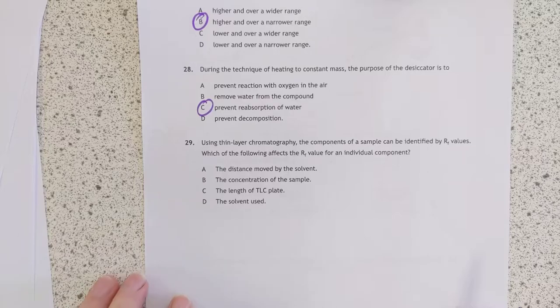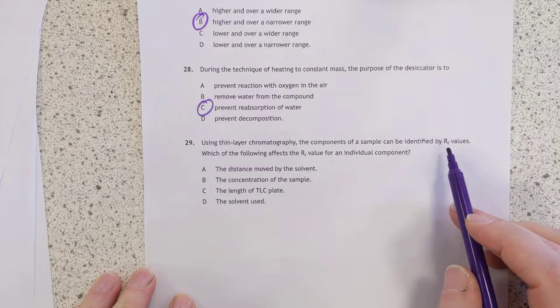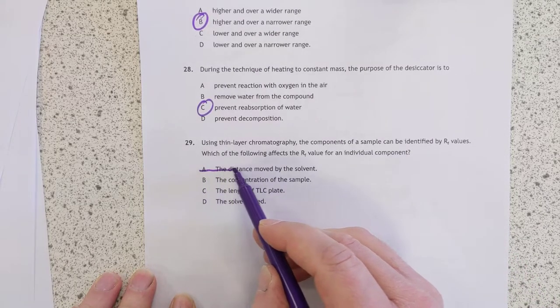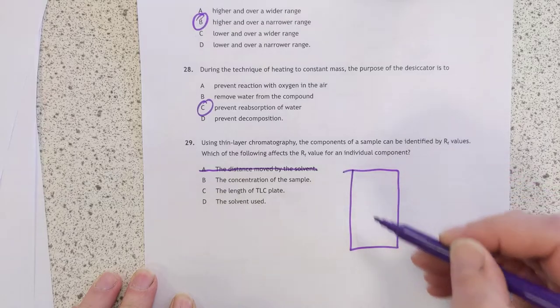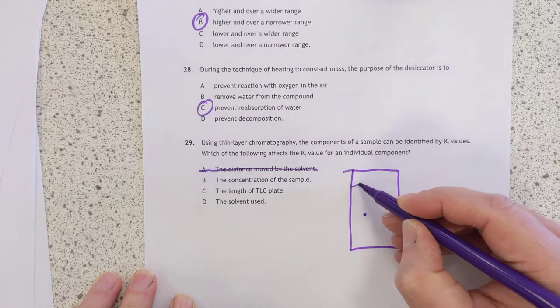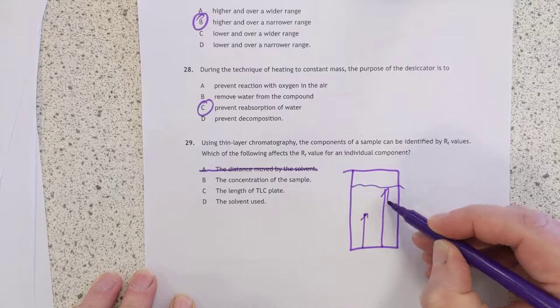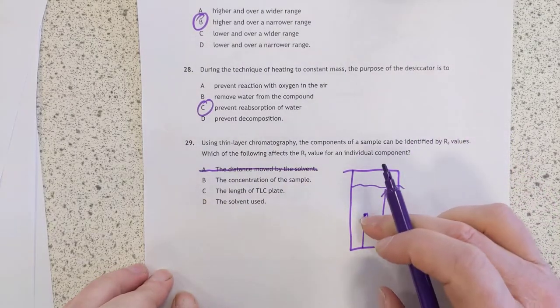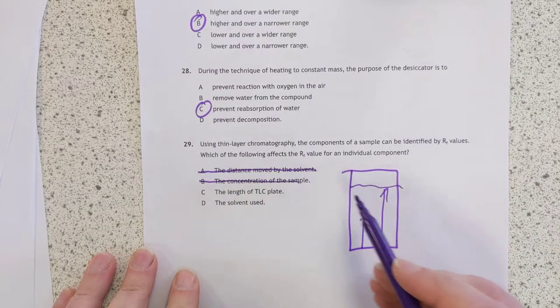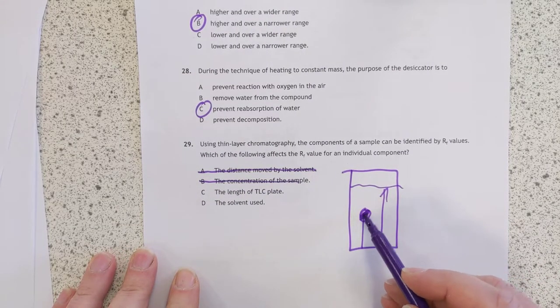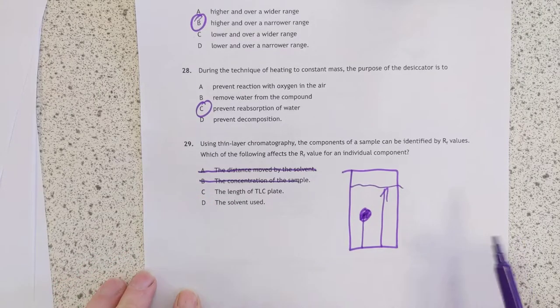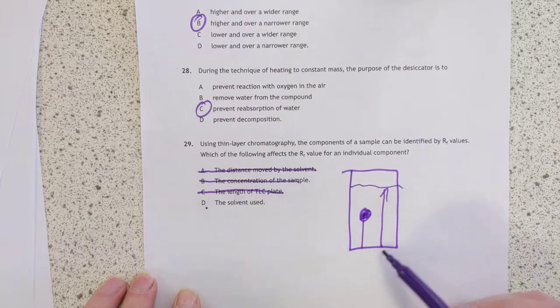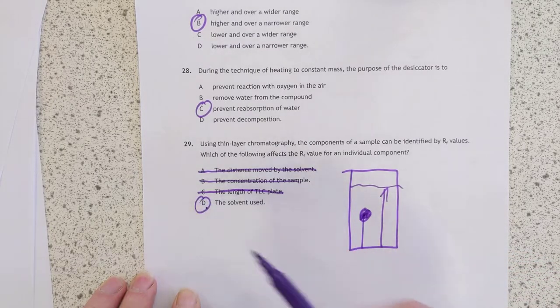29. Using TLC, RF values, which the following would affect the RF values for an individual component. It would not be that because the RF value is the ratio that particular dot has traveled compared to the solvent. So it's that ratio there, this to this. And if this moved further, this would just stretch up as well. Concentration of the sample, nope. That just affects how dark or light that spot is. The length of the TLC plate, for the same reason as A is wrong, C is also wrong. That, on the other hand, that will vary the distance that it moves in the particular solvent.